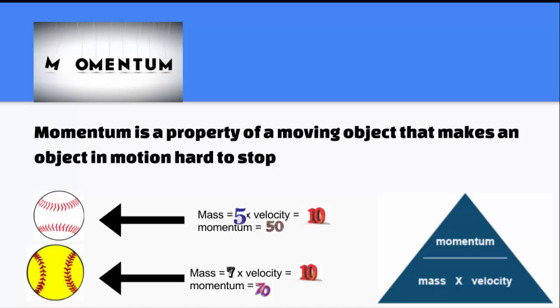Momentum. Momentum is a property of a moving object that makes an object in motion hard to stop. The larger the object, and the faster the object, the greater the momentum. You get momentum by doing mass times velocity.